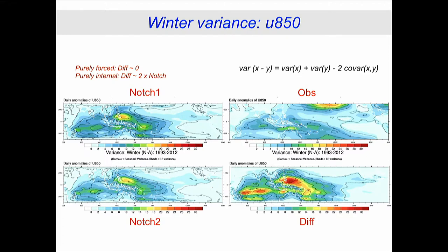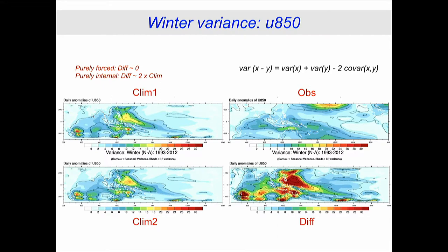The climatology run tells the same story: the difference is twice as big and it's all internal, but the structure is totally different because the climatology is very poor. We've ruined the basic state by removing too much high-frequency information from the boundaries — so this is not a useful experiment as a clean test, just as a benchmark. Ray and Zhang have this same problem with their work.